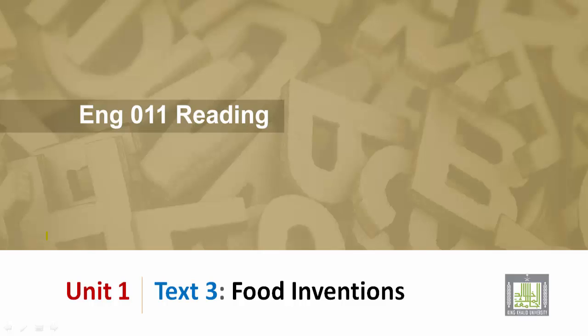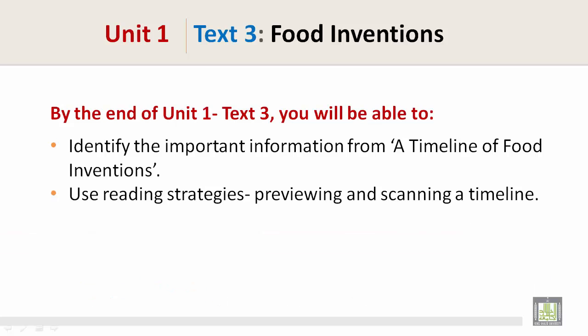English Year 11 Reading Unit 1 Text 3: Food Inventions. By the end of Unit 1 Text 3, you will be able to identify the important information from a timeline of food inventions, and use reading strategies — previewing and scanning a timeline.